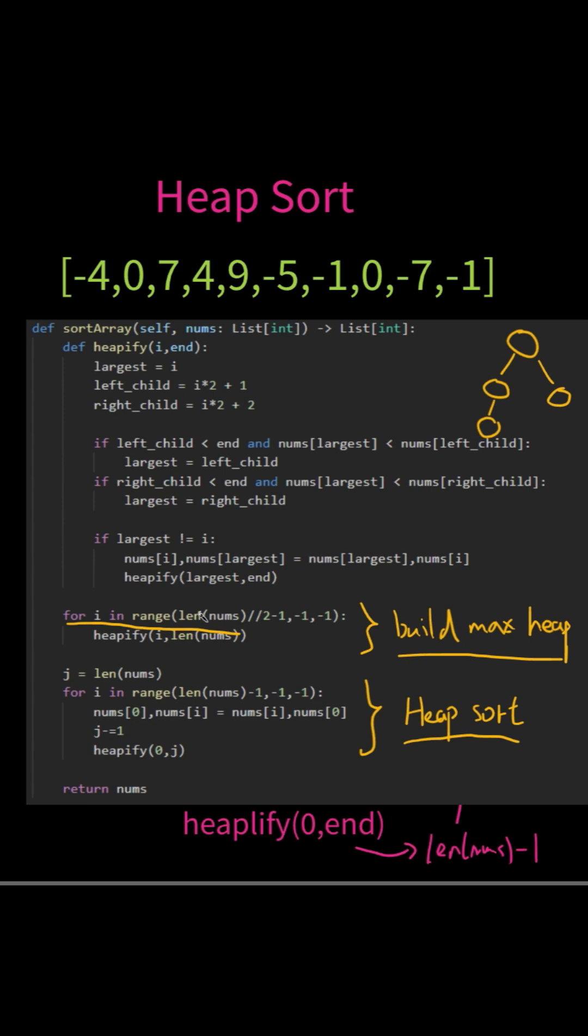In terms of the time complexity, the first for loop we have O(n) because we are looking at every node. For each node, the heapify function has O(log n) time complexity because it depends on the height of the tree.